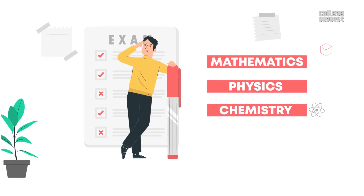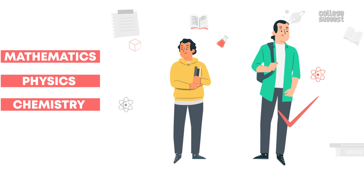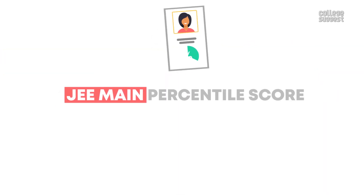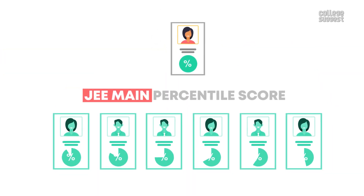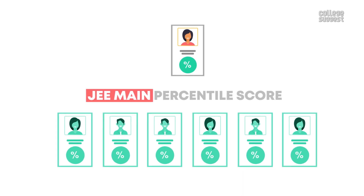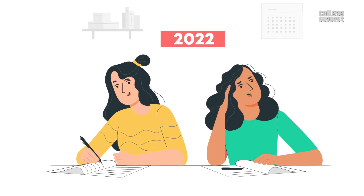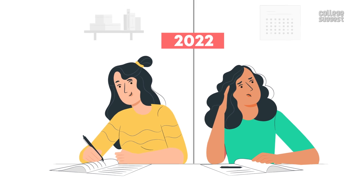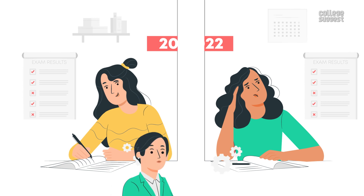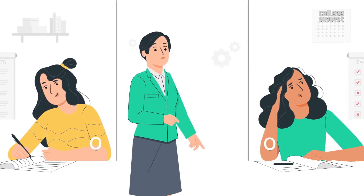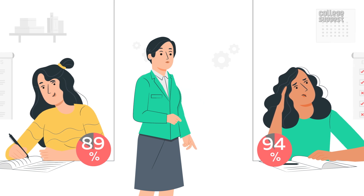If the tie scores still cannot be resolved, then candidates older in age will be given a higher rank. The JEE Main percentile score of a candidate shows how many candidates have scored equal to or below that particular percentile in the exam. For 2022, the exam will be conducted in two sessions, and results will be released separately for each session. If a student appears for both sessions, then the best score of the two sessions will be taken into consideration.